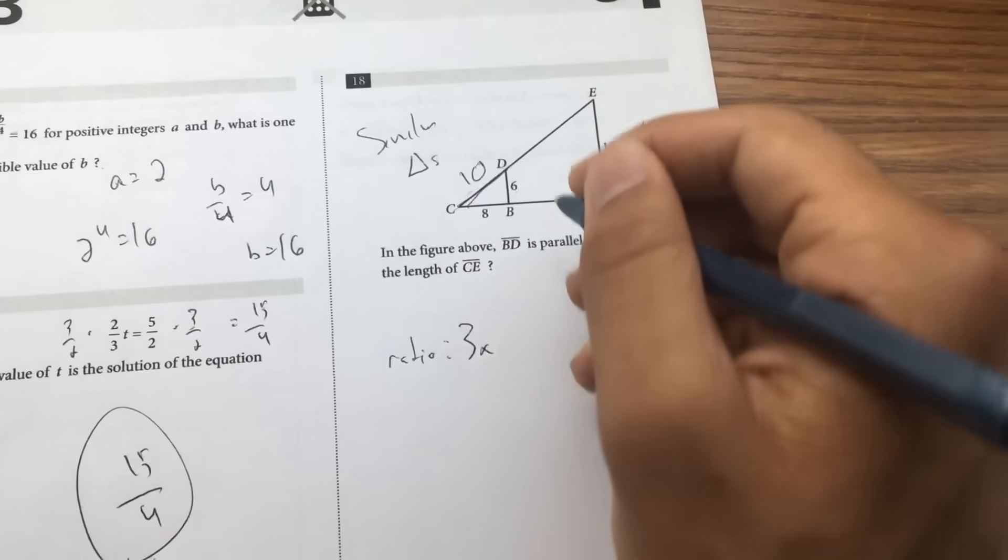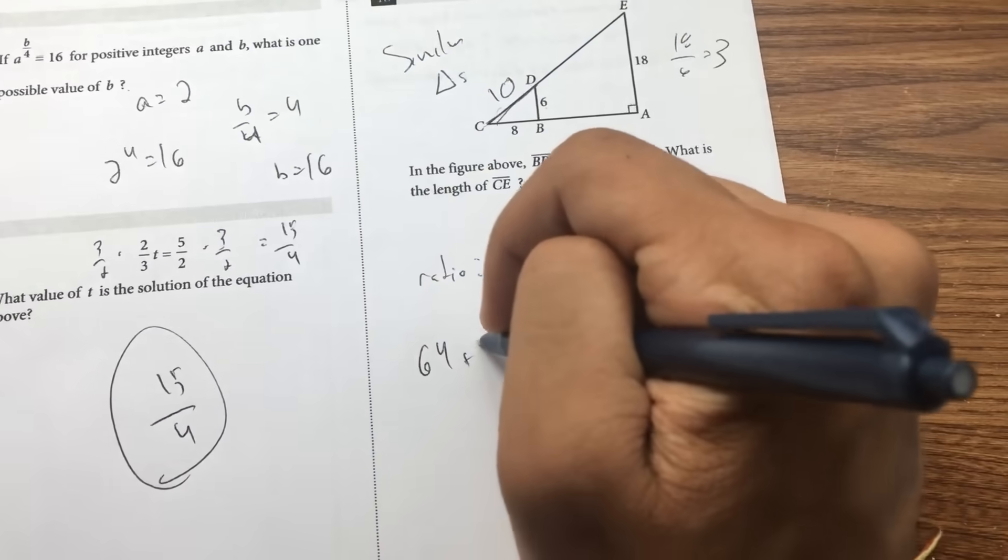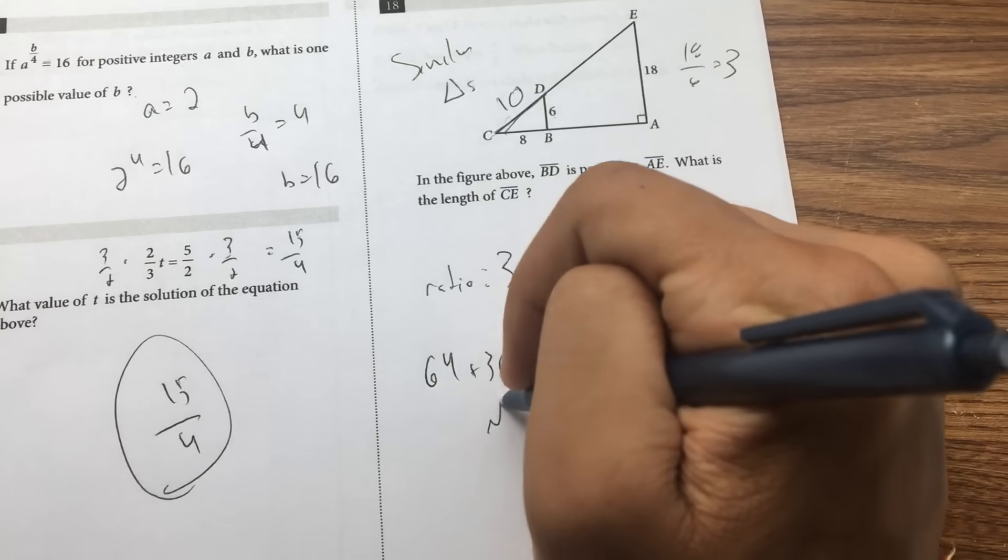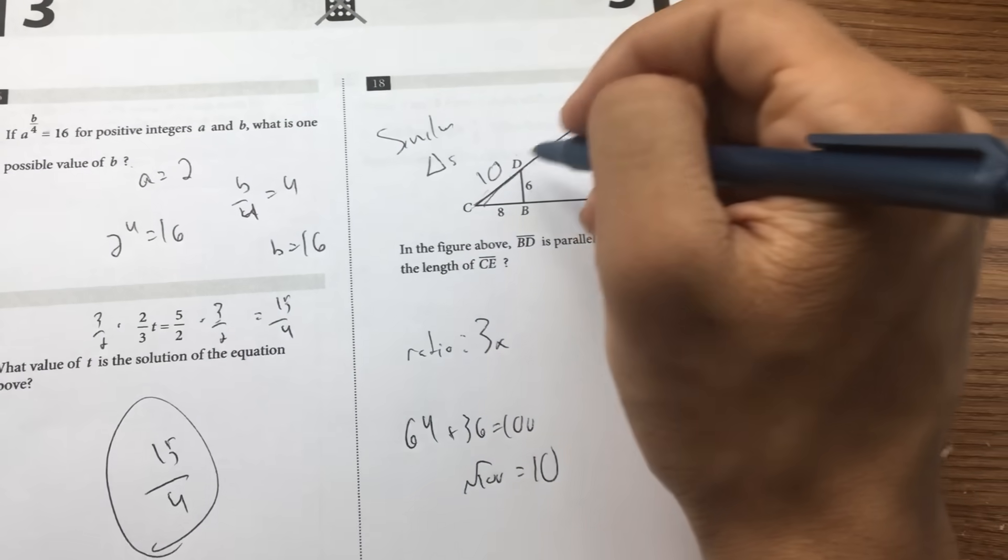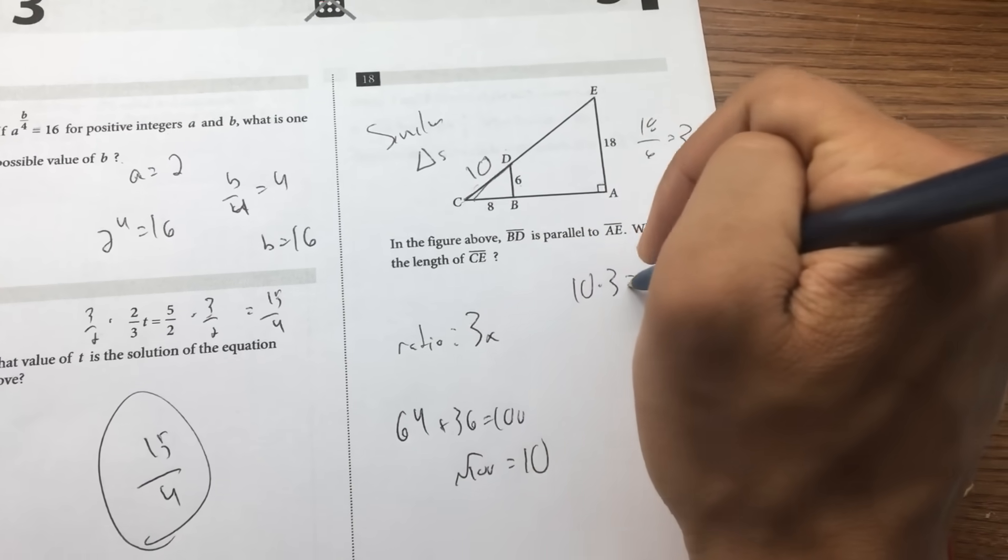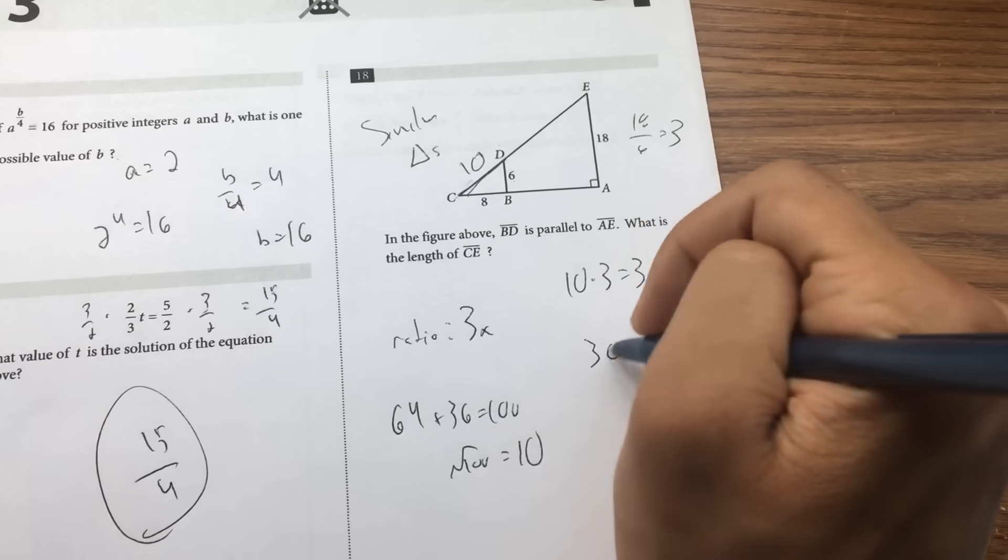If you want to find CE, you have to find CD first. This is a 6, 8, 10 triangle, and that's a triangle that you should memorize. But if you want to see the math, 64 plus 36 equals 100, square root of 100 is equal to 10. Multiply by 3, 10 times 3 equals 30. 30 is the answer.